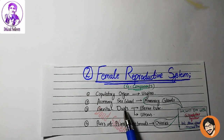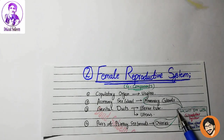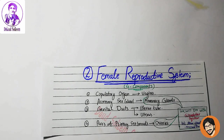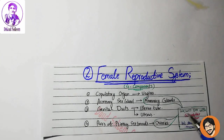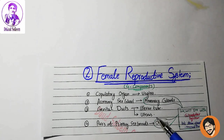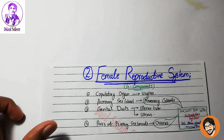The accessory sex glands, mammary glands, genital ducts, uterine tube, uterus, and primary sex gonads — ovaries. Because of stroma and parenchyma, we will do ovaries with the glandular system. So automatically you should know that when we talk about the tubular system, we mean vagina, uterine tube, and uterus. So let's start with our vagina.